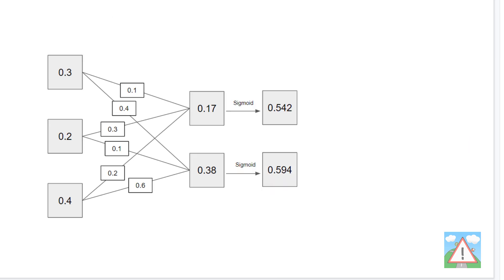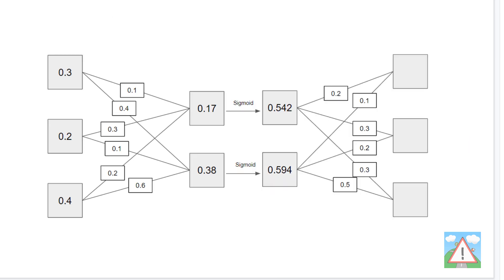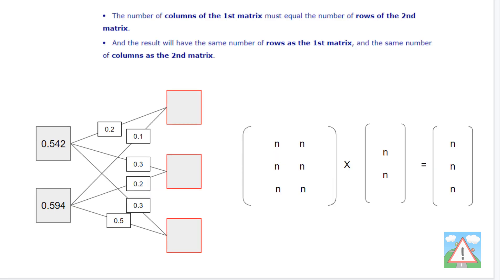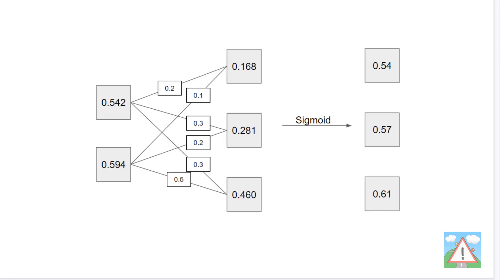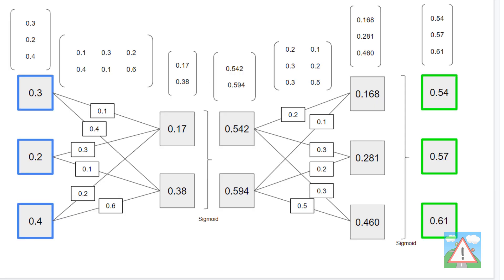We take these values and go through sigmoid, then introduce some more weights. With a hidden layer of 0.542 and 0.94, we make a matrix of those and the weights going to the output layer. The output layer is three nodes, so we need a matrix of three rows and one column. That means we multiply a matrix of three rows and two columns by two rows and one column. That multiplication gives us the result of our output, and we put this through sigmoid to get our final result.